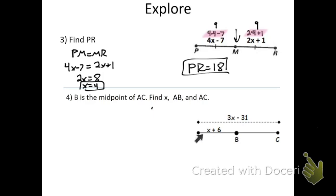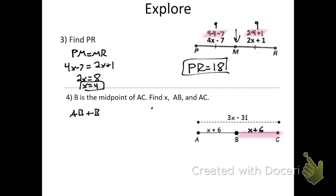This last one tells us that B is the midpoint of AC. Find X, AB, and AC. This one's a little harder — you've got to think a little creatively. We know AC is the whole segment and AB is given as X plus 6, but we don't know BC directly. If B is the midpoint and AB equals X plus 6, then BC must also equal X plus 6. So we can set up: AB plus BC equals AC, which gives us X plus 6 plus another X plus 6 equals 3X minus 31.